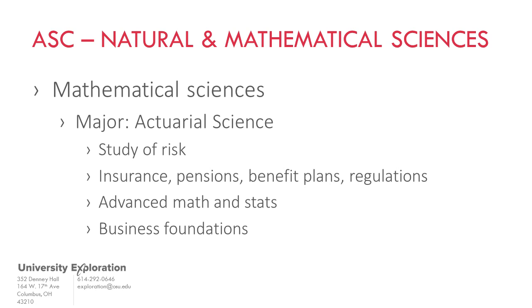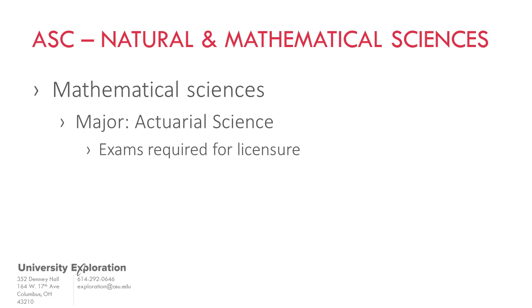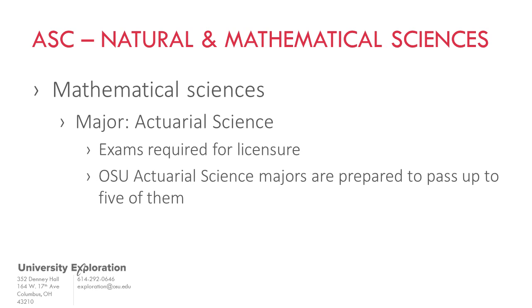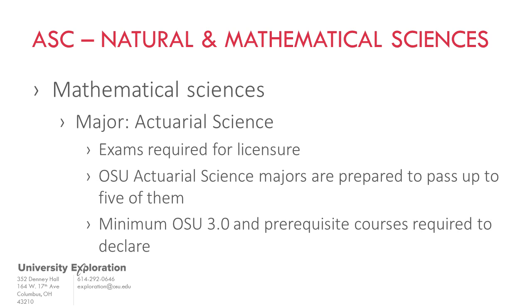To become an actuary, you must pass a series of actuarial exams. The Actuarial Science curriculum is specifically geared towards preparing you to take up to five exams before receiving your undergraduate degree, creating a competitive advantage in the job search. A minimum OSU GPA of 3.0 is required to declare the major, along with certain prerequisite courses.